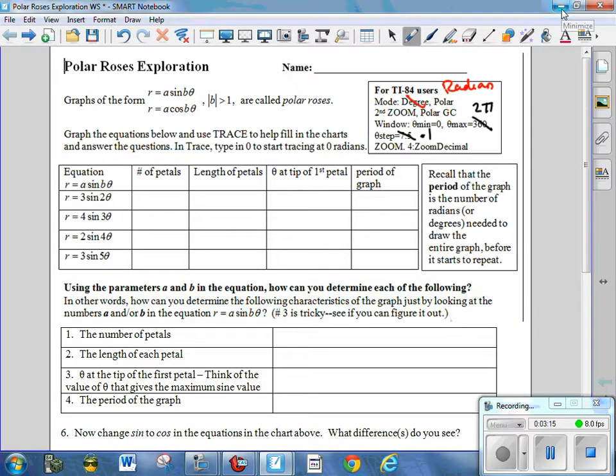So I'm going to fill in this chart. It has 4 petals. The length of the petal is 3. Theta at the tip of the first petal was pi over 4. And the period of the graph was 2 pi.